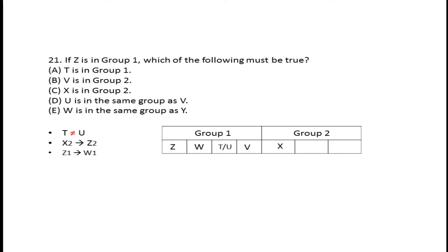If V is in Group 1, then X must go to Group 2. And if X goes to Group 2, there's a condition that if X is in Group 2, Z must also be in Group 2. But Z already went to Group 1.